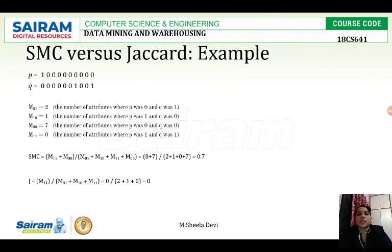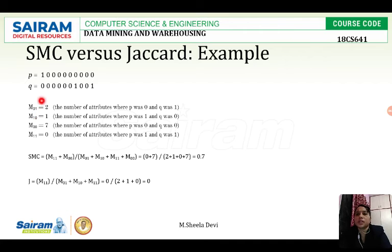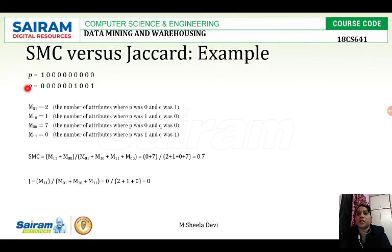We will calculate SMC first. Here are two binary vectors p and q. To calculate m01, we look for where p is 0 and q is 1. That combination appears twice, so m01 equals 2. For m10, where p is 1 and q is 0, that appears only once, so m10 equals 1.